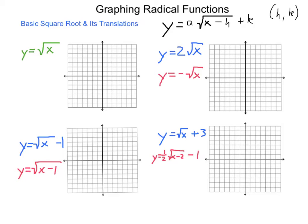We're going to graph a series of functions. Starting with the parent function y equals square root of x, we have the point 0,0 as our starting point, then 1,1 and 4,2. If we could get out to it, we would also have 8,3, but that's just beyond the reach of the graph.